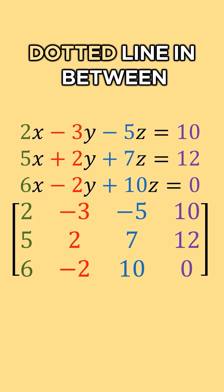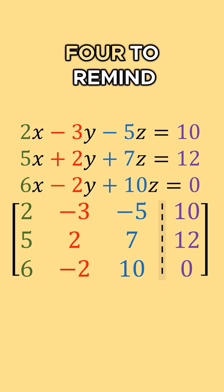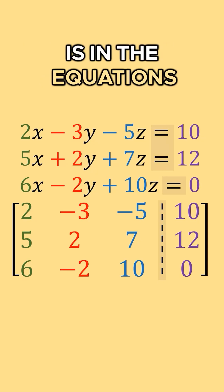We then insert this dotted line in between column three and column four to remind us that that's where the equal sign is in the equations.